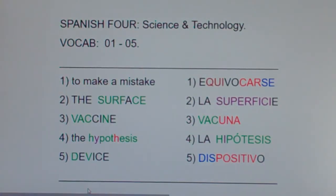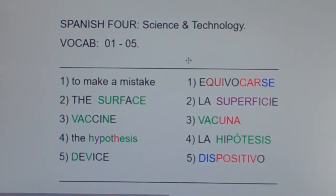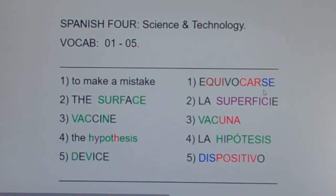To make a mistake or to be mistaken is equivocarse. That's a fun word. Everybody say equivocarse. First of all, I want you to notice that it's reflexive. So, 'I made a mistake' isn't 'yo equivoqué,' it's 'yo me equivoqué.'